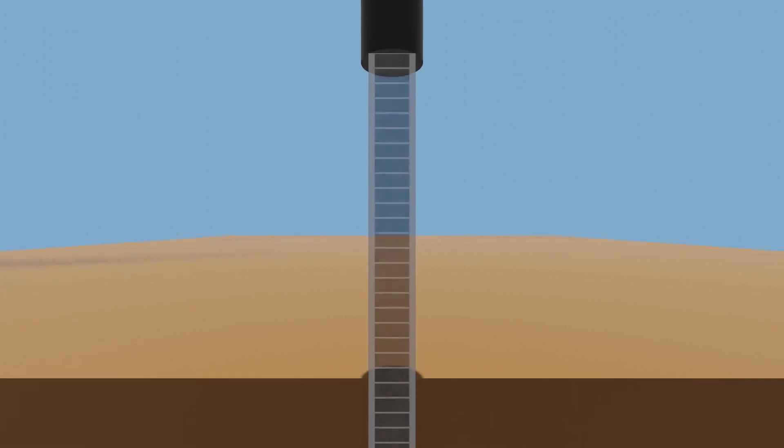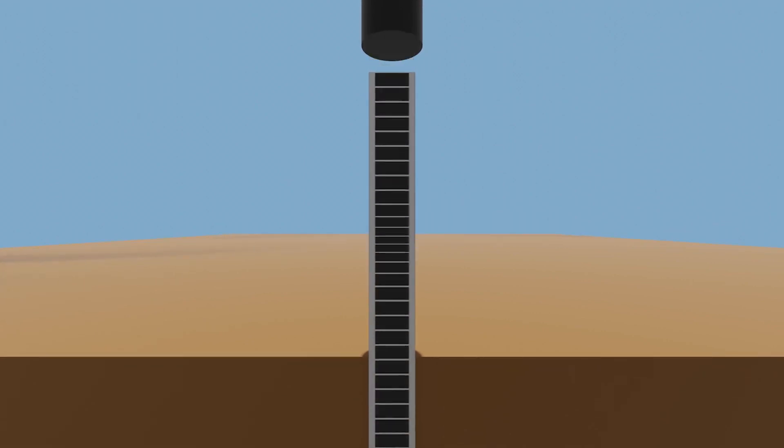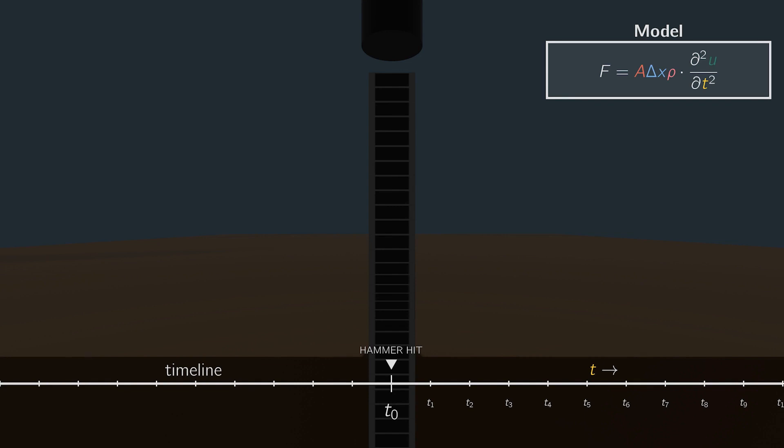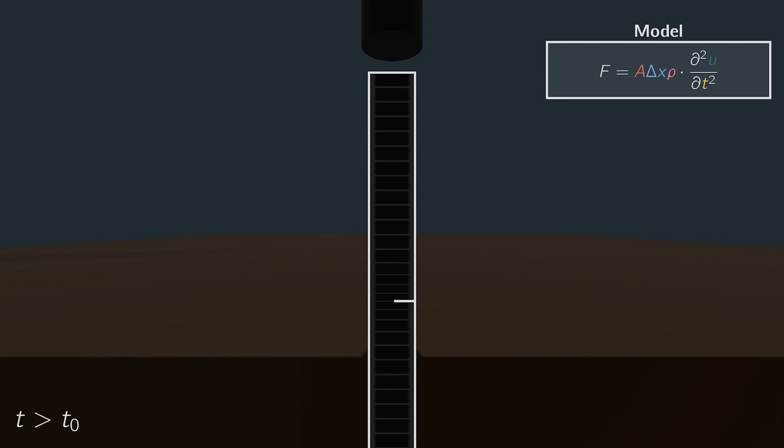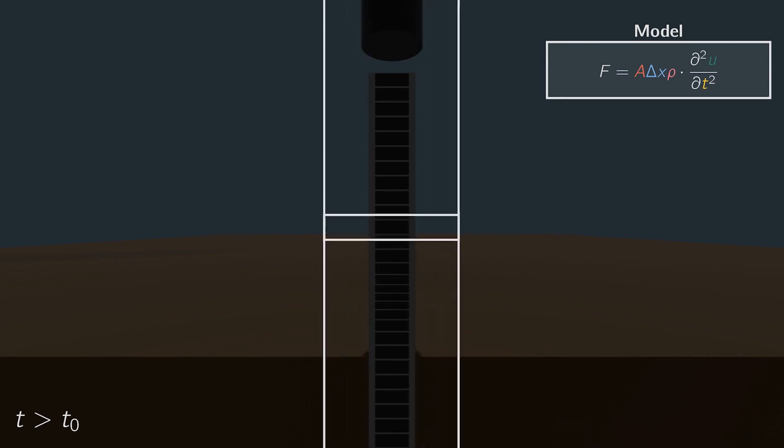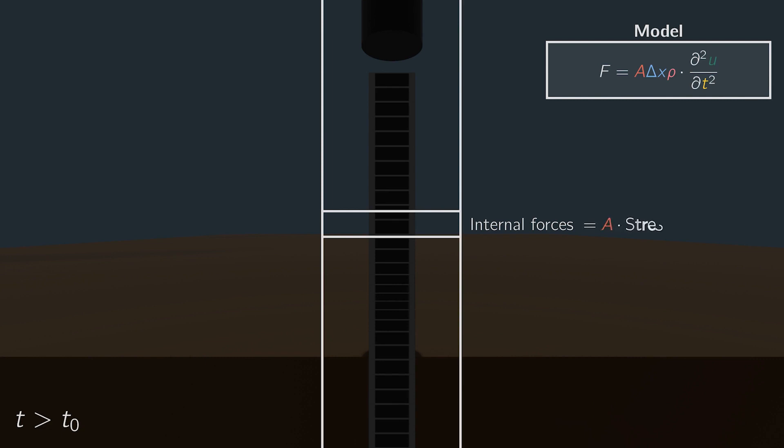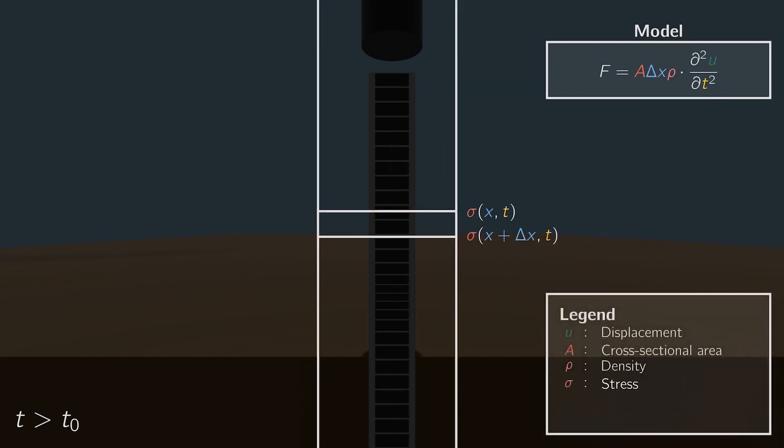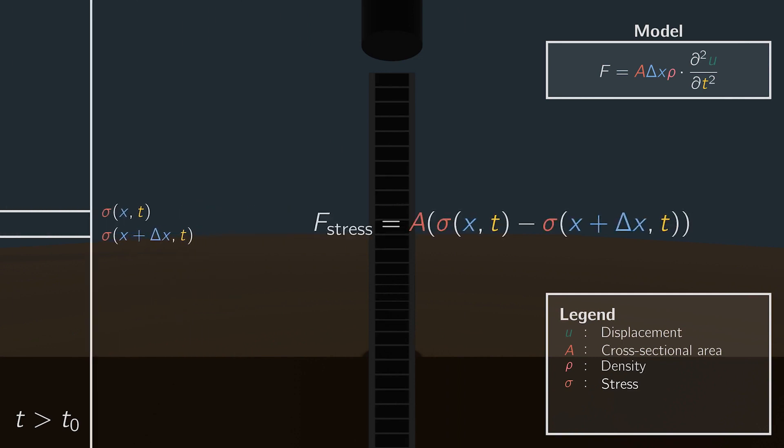As time goes by, the wave will propagate through the pile due to the internal forces. So what happens exactly when T is greater than T0? As Newton's law describes, all forces should be equal to the mass times acceleration. But which forces are acting on a slice of the pile? These forces are called the internal forces, and they are equal to the cross-sectional area of the pile times the stress. Of course, the stress is a function of time and location, like the displacement. We will denote the stress as sigma, so the total force acting on the slice is equal to the difference between the stress on top and below the slice, times the area.